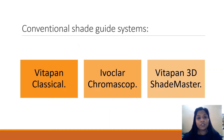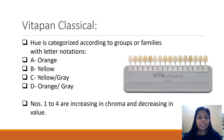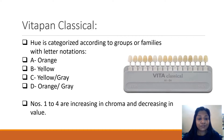In the conventional method, three examples are: the Vitapan Classical, the Ivoclar Chromoscope, and the Vitapan 3D Shade Master. In the Vitapan Classical, hue is categorized according to groups labeled A, B, C, and D — where A is orange, B is yellow, C is yellowish grey, and D is orangeish grey. Numbers from 1 to 4 are also denoted, with increasing chroma and decreasing value from 1 to 4.